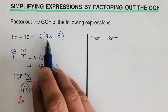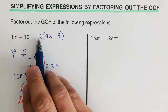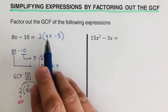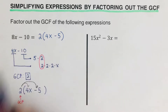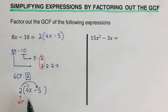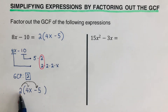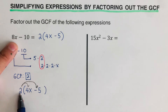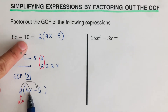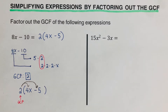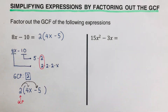These two expressions are equivalent: 2 times 4x is 8x, and 2 times negative 5 is negative 10. Another way to find what goes inside the parentheses is to divide each term by the GCF: 8x divided by 2 is 4x, and negative 10 divided by 2 is negative 5. Either way, you get the same answer, and this is the factored form of 8x minus 10.